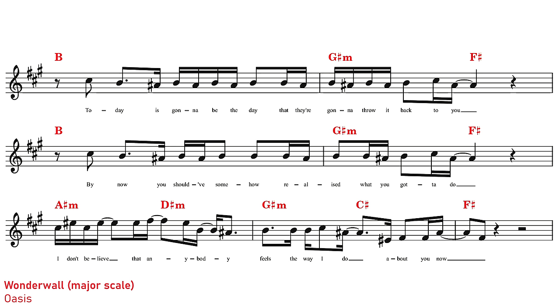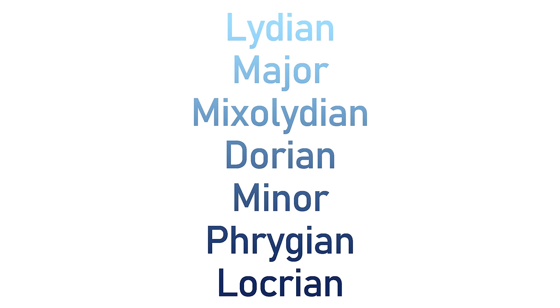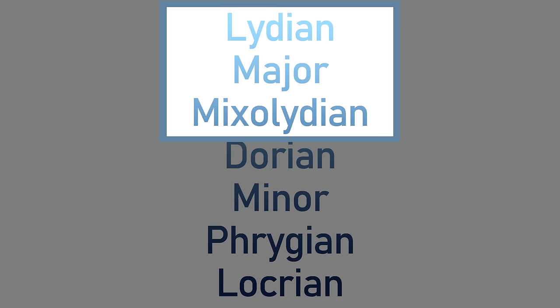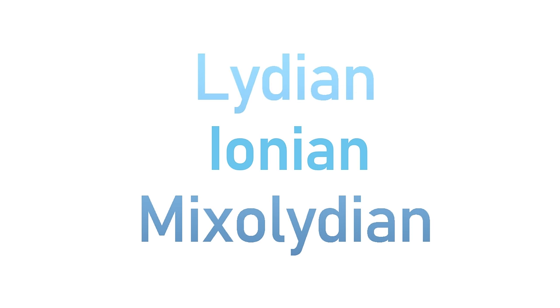So that's Wonderwall in the major scale. But in our family of seven modes, there's actually three different types of major mode. The major scale is one of those major modes and it's known as Ionian when we're talking about modes. But we also have Lydian, which is effectively a brighter version of the major scale, and Mixolydian, which is effectively a slightly darker version of the major scale.